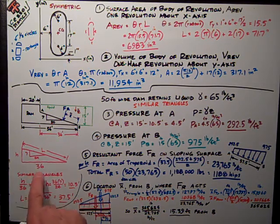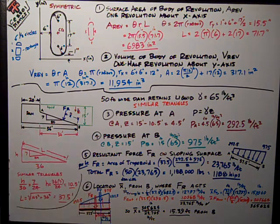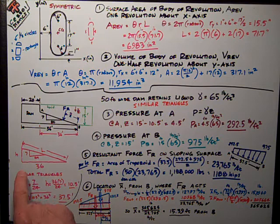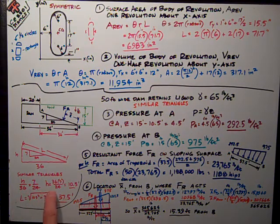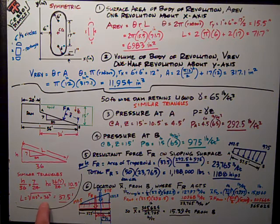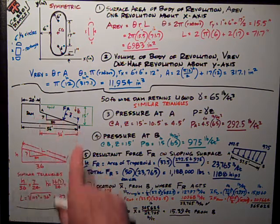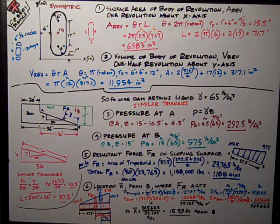A similar triangle shows me that the height of this sloping part is, by similar triangles, this relationship, that height is 10.5 feet. And the length of that is the square root of the sum of the squares, 10.5² plus 36² equals 37.5 is the length of the sloping surface. So I'm going to use that as I do the solution.